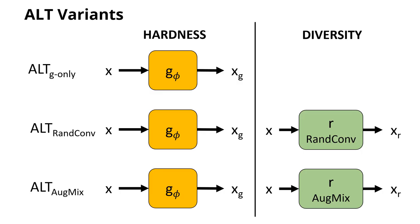We get three variants of ALT. The first one uses hardness only — this is ALT only — and the second and third combine ALT with previous static diversity modules like AugMix or RandConf.